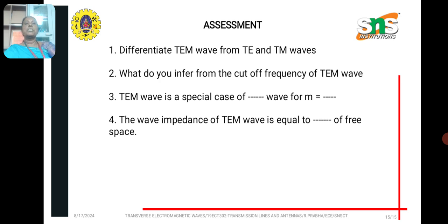Now, the assessment question: differentiate transverse electromagnetic wave from TE and TM waves. We know that TEM wave components, the electric and magnetic fields are 0 in the direction of wave propagation. Whereas, in TE wave, electric field in the direction of wave propagation is 0. For transverse magnetic waves, magnetic field in the direction of wave propagation is 0. And the cutoff frequency of TEM wave, we know it is 0. So, we infer from that is below 0 frequency, there will not be any wave propagation. And TEM wave is the special case of TM wave for M equal to 0.